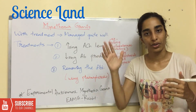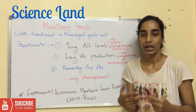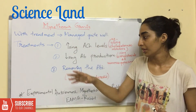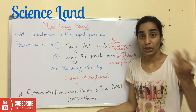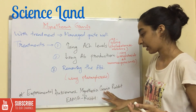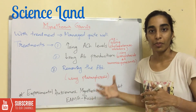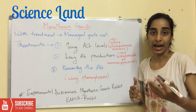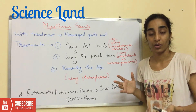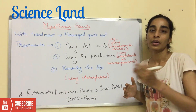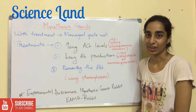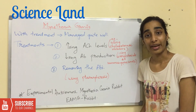To study autoimmune diseases, animal models are normally used. For studying Myasthenia Gravis, the animal model used was the experimental autoimmune Myasthenia Gravis rabbit. That particular model led to the discovery that autoantibodies binding to the acetylcholine receptor was a cause of Myasthenia Gravis. That's it for today's video. Thank you so much for watching. Do share and subscribe.